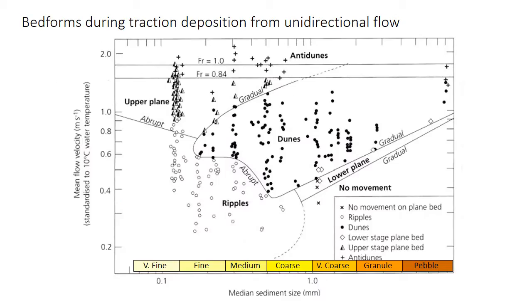You learned last class how the bed forms that develop under unidirectional water flow are influenced by sediment grain size and current velocity, including this very important diagram. Under typical river conditions, ripples and dunes are the main bed forms you would expect to find. There are rare braided river systems dominated by upper plane bed stratification, but that requires unusual conditions — the river must be supplied with a very restricted range of very fine sediment. Because ripples and dunes are the predominant bed forms in any type of river, we'll focus on their sedimentary structures in this video.